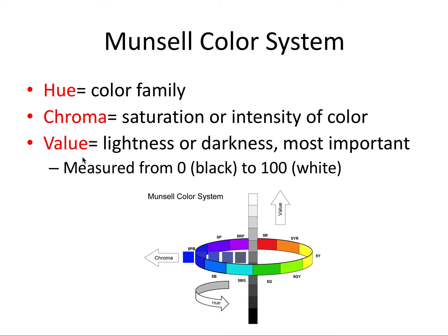Value is the lightness or darkness of that color, and when it comes to shade selection for a crown, this is the most important trait of the three. Value is measured from zero, which would be pure black, to a hundred, which would be pure white, with anything in the middle being a light or dark variant of that color.